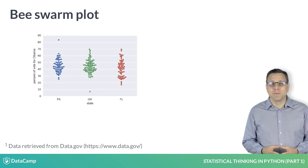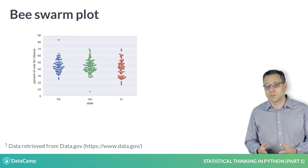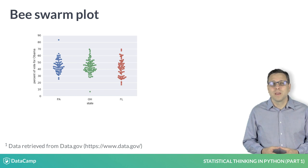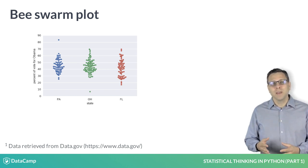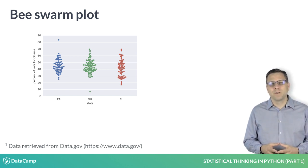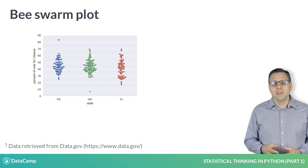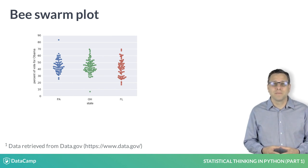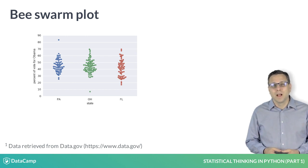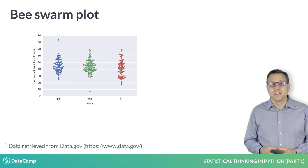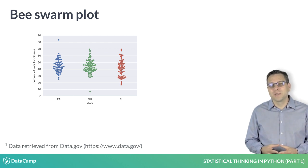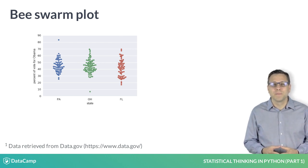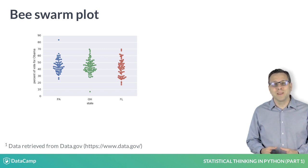To remedy these problems, we can make a B-swarm plot, also known as a swarm plot. This is best shown by example. Here is a B-swarm plot of the vote totals in the three swing states. Each point in the plot represents the share of the vote that Obama got in a single county. The position along the y-axis is the quantitative information. The data are spread along x to make them visible, but their precise location along the x-axis is unimportant. Notably, we no longer have any binning bias and all data are displayed.